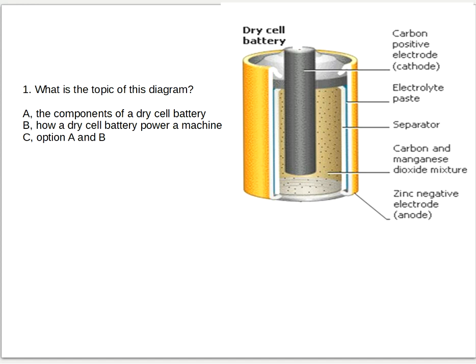Is it A, the components of a dry cell battery, or B, how a dry cell battery powers a machine, or C, option A and B? Five seconds to answer.